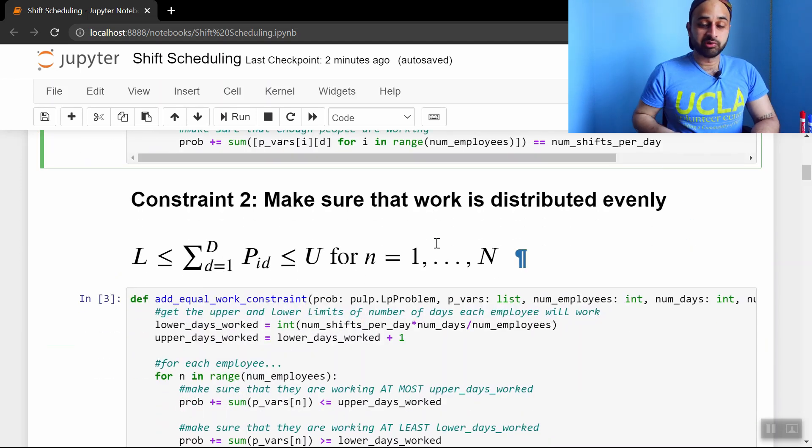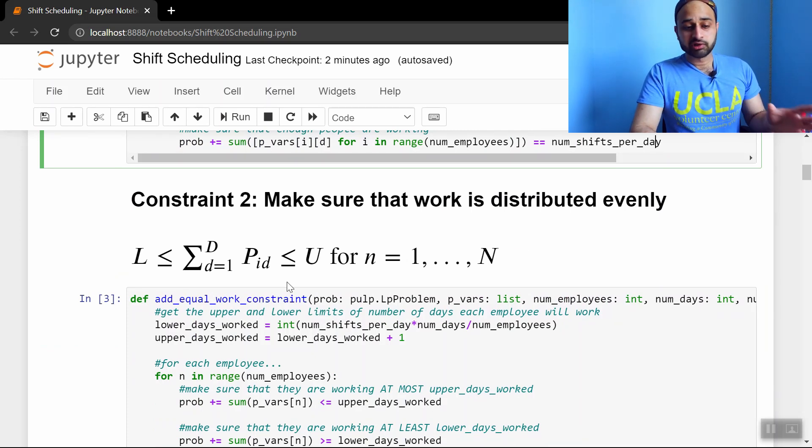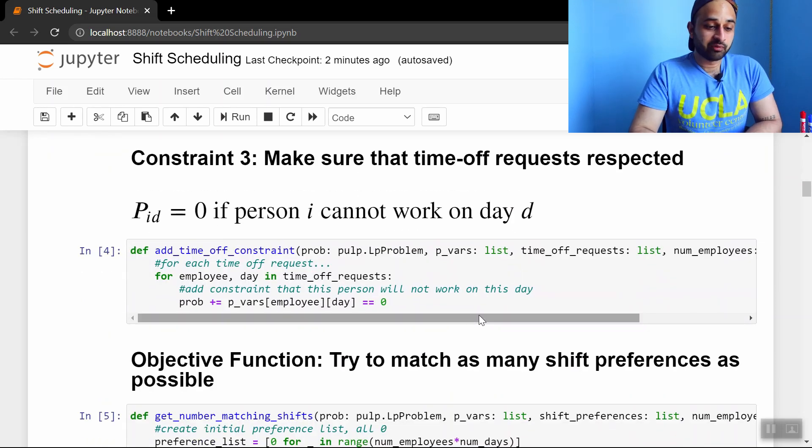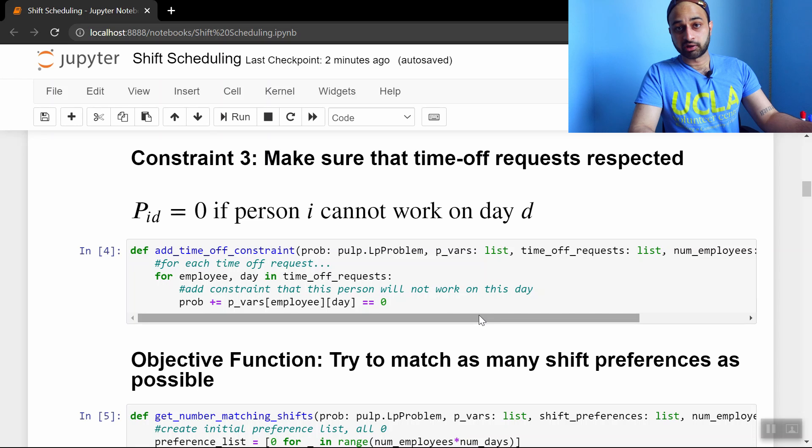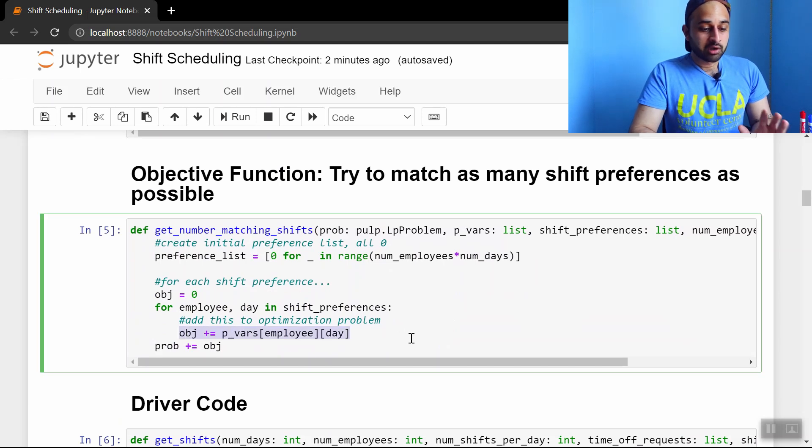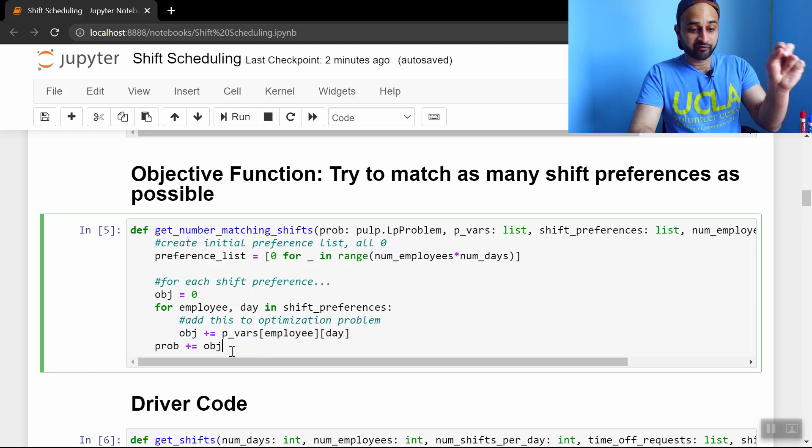This other constraint makes sure that work is distributed evenly, so make sure that the number of days any person worked is greater than some lower bound and less than some upper bound. See the same constraints here, so we have the upper bound constraint and we have the lower bound constraint. And then finally we have the constraint where you're going to make sure to not schedule people on days they want off, and the same exact code here. So this code is pretty standard, easy to read. And then we have the objective function, which is basically just adding up all of the preferences, and then we're putting that in our linear programming object here. So basically it's going to try to maximize the number of matches of preferences that people said,